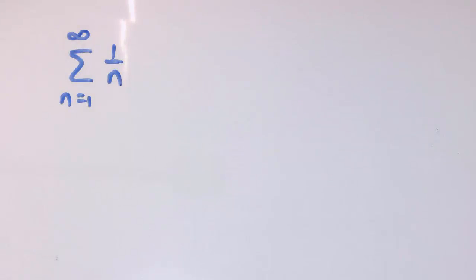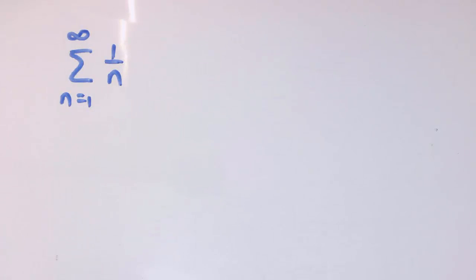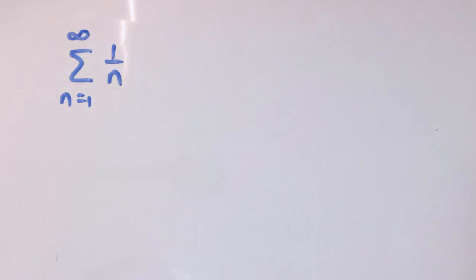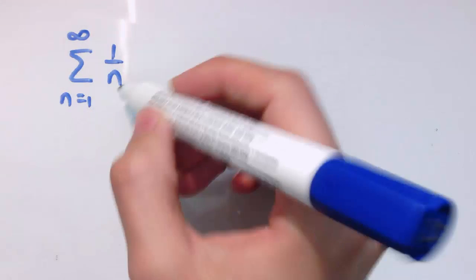I want to show you here a sequence where the terms get smaller and smaller, but the sum to infinity doesn't exist. We've seen for a geometric progression that if the common ratio is between minus 1 and 1, the terms decrease fast enough that we do get a sum to infinity, but that's not necessarily the case for other types of sequences. There's a bit of logic that you've got to be really careful with when you go on to do more math.